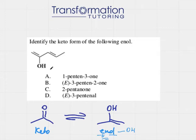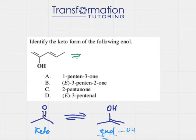Now let's take a look at this molecule to see what keto form it will equilibrate to. I have OH on this carbon. Looking at the enol and keto forms, where I had an OH, that's where my double bond O would be. So let me number this molecule and redraw it.